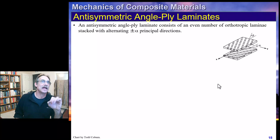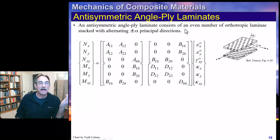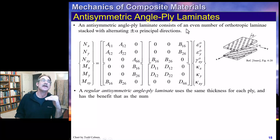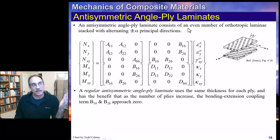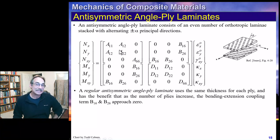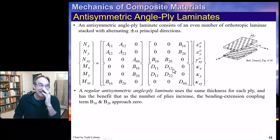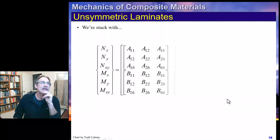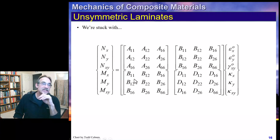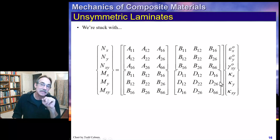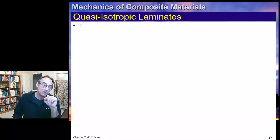An anti-symmetric angle-ply laminate has an even number of plies and is otherwise symmetric-like, so we call it anti-symmetric. It has no extension-shear coupling, no bending-twist coupling, and some eliminations of extension with certain kinds of bending. If we have an unsymmetric laminate, we are stuck with all terms and all coupling, though we can still handle it analytically.